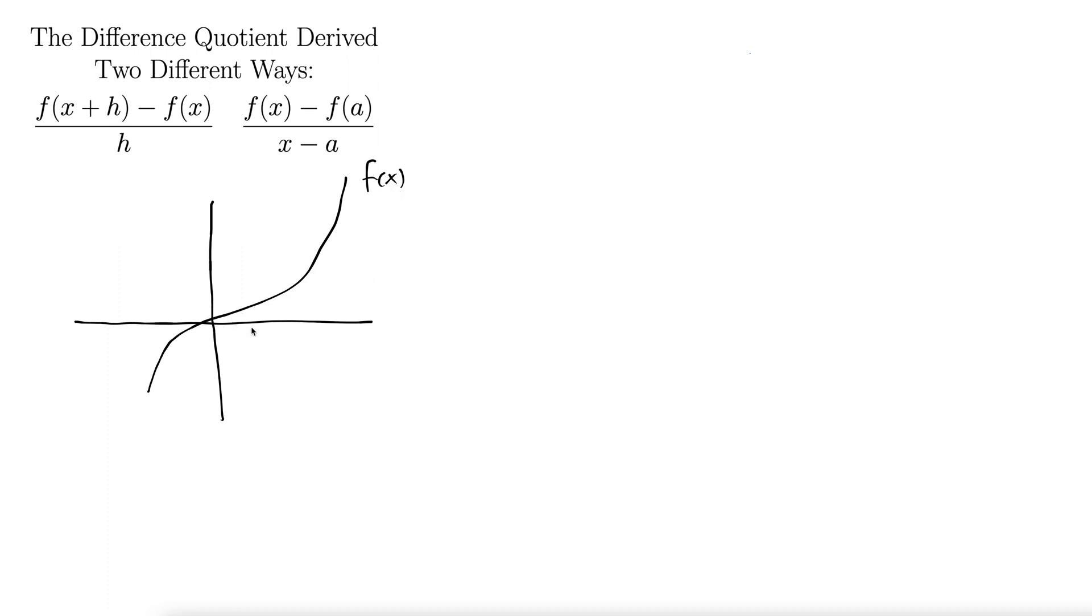The deal is we want to pick some point x, totally arbitrary, and then we want to move off of that point some distance h. What that gives us is a new point which is of course x plus h. So that's where this x plus h business comes from. We start with some x, we add h to it, and then we have x plus h.